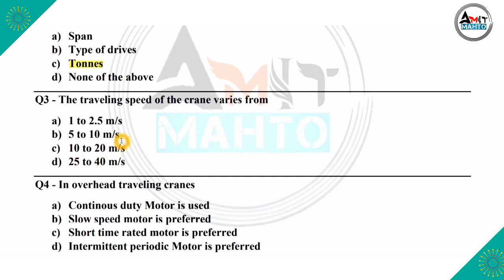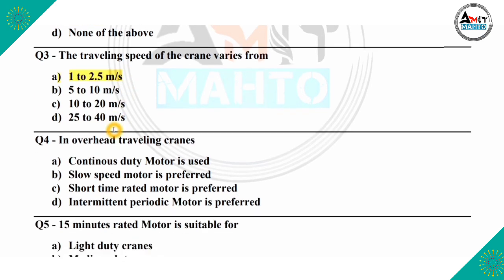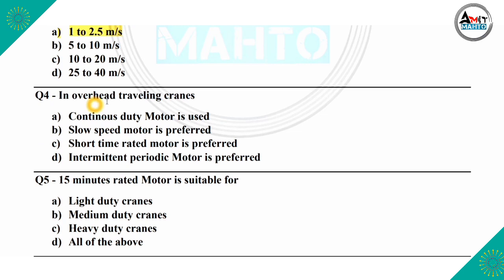The correct answer is option A, which is 1 to 2.5 meter per second. The next question is: in an overhead traveling crane, a continuous duty motor is used, slow speed motor is preferred, short time rated motor is preferred, or intermittent periodic motor is preferred. The correct answer is option D, which is intermittent periodic motor is preferred.